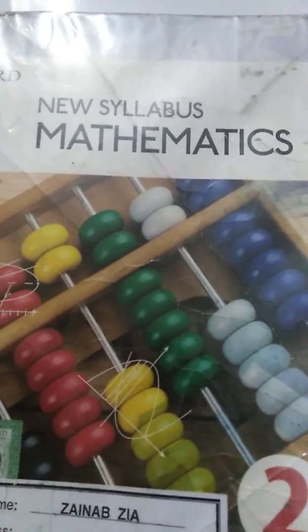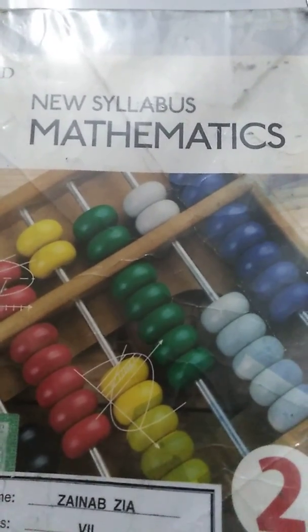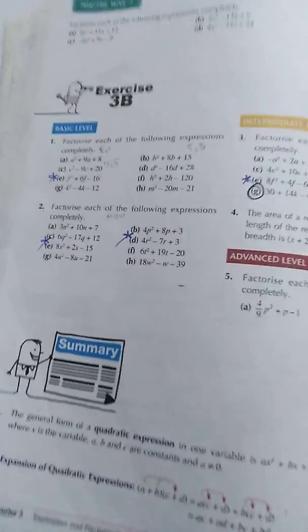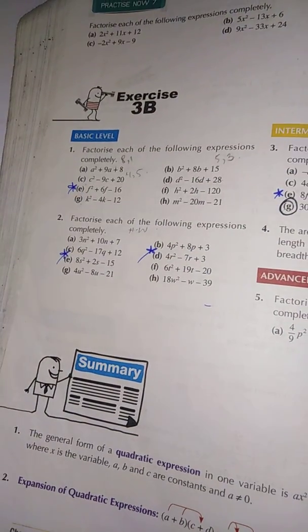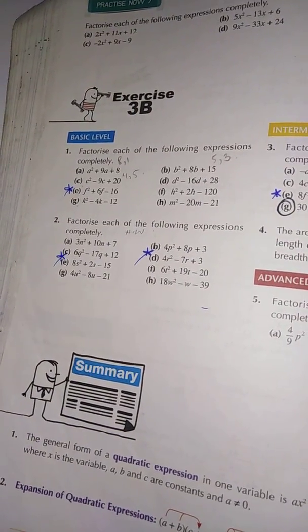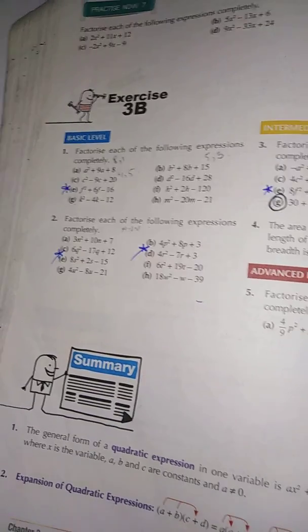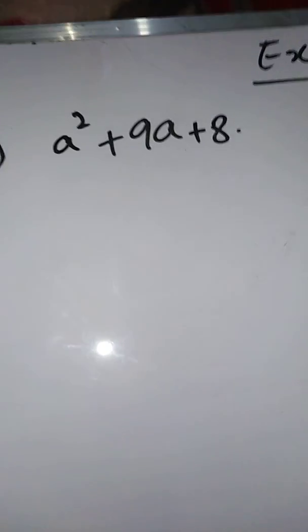NSM 2, today I'm going to explain Exercise 3B. The question is: factorize each of the following expressions completely. In this question, you have to make the factors.